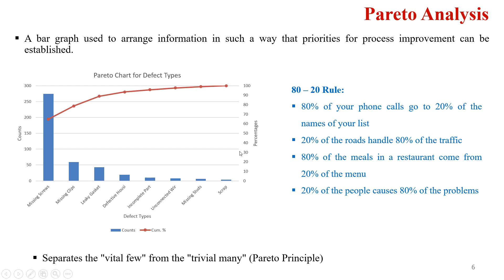The idea behind the Pareto chart is to prioritize those issues which we should address in order to improve the process. When we say Pareto analysis, we are applying the 80-20 rule. On the percentage axis, at the 80% mark, if we focus on missing screws and missing clips type of problems — which are approximately 20% of all problem types — we would be able to solve 80% of our problems. For example, 80% of your phone calls go to 20% of the names on your phone list, and 20% of roads handle 80% of the traffic in a city.